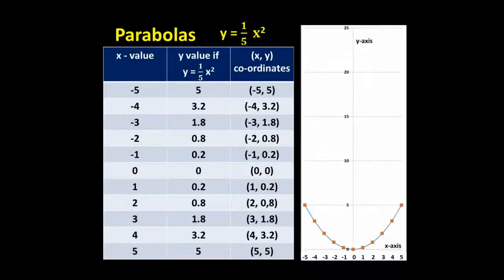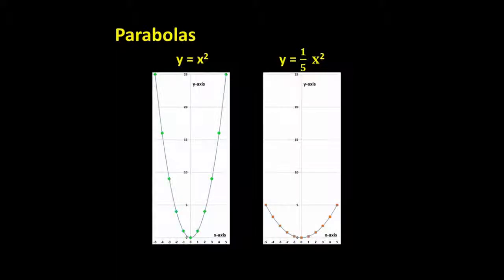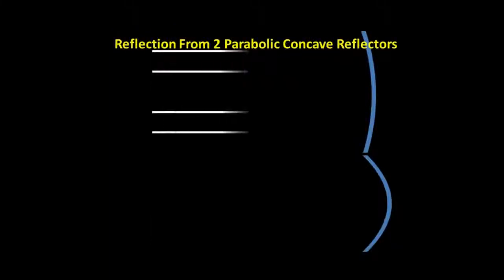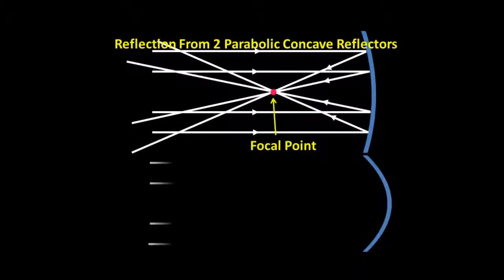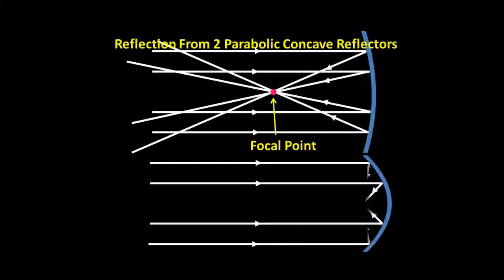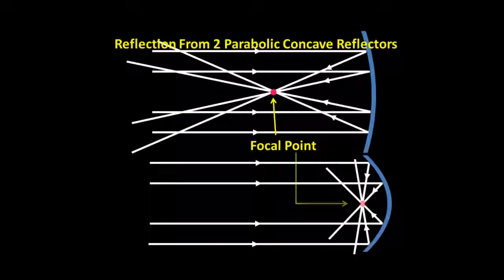You can compare the two parabolas if we place them side by side. Now all parabolic concave reflectors can focus parallel beams of light to a focus point. The top one here focuses the light beams to the point shown. The bottom one, being more curved, has a much shorter focal length.